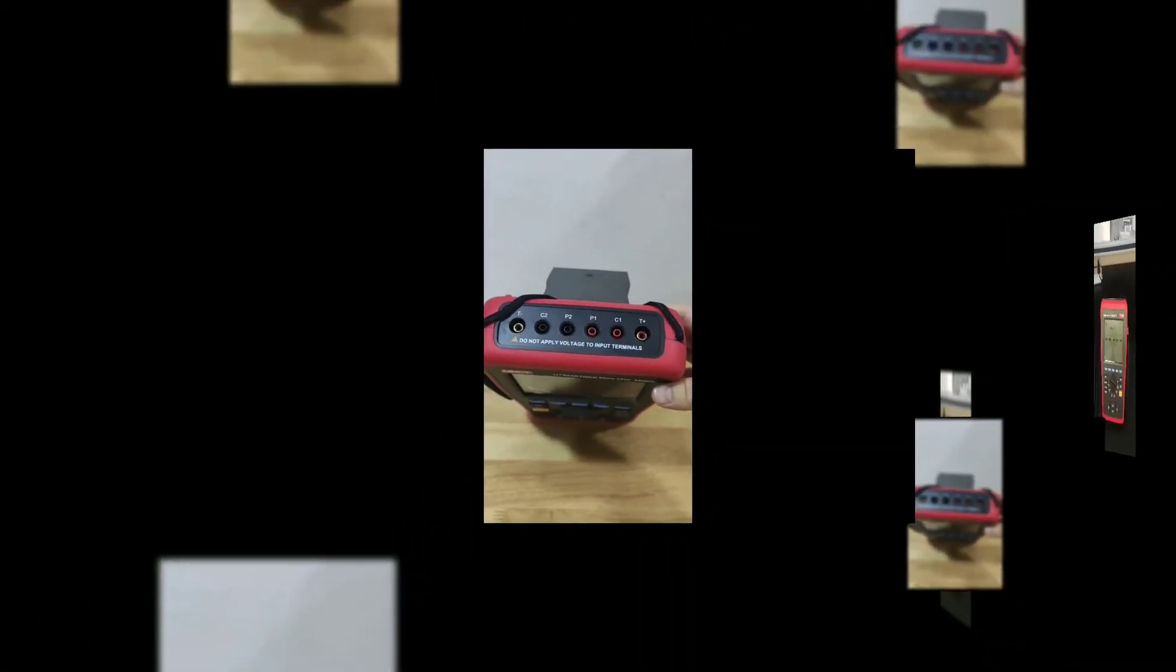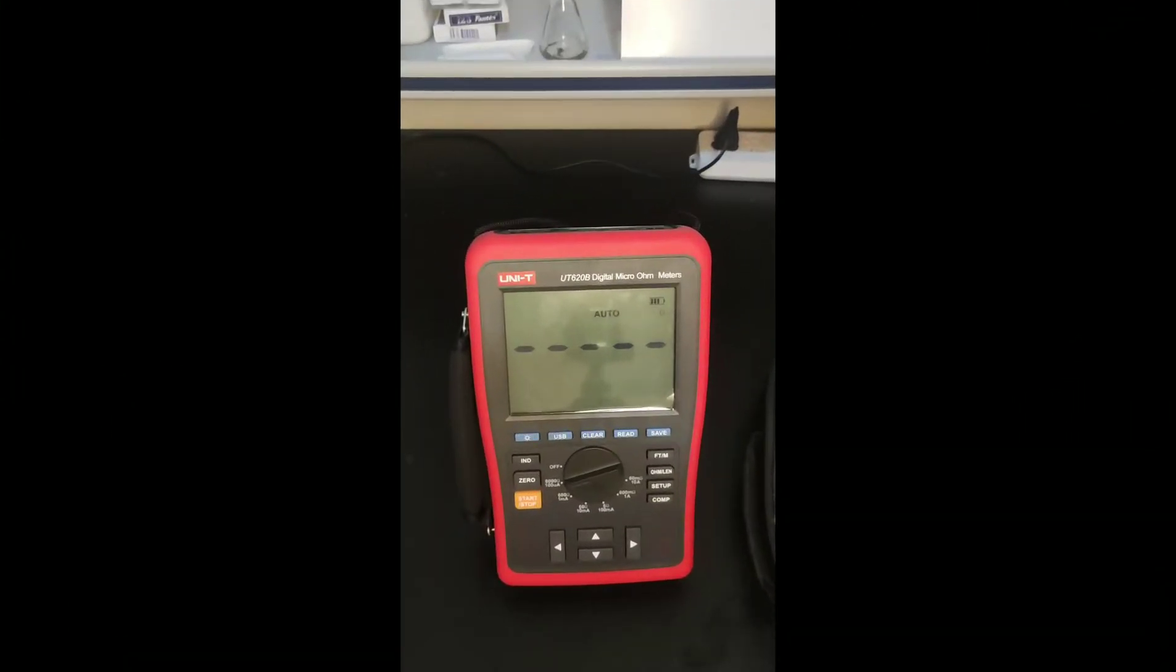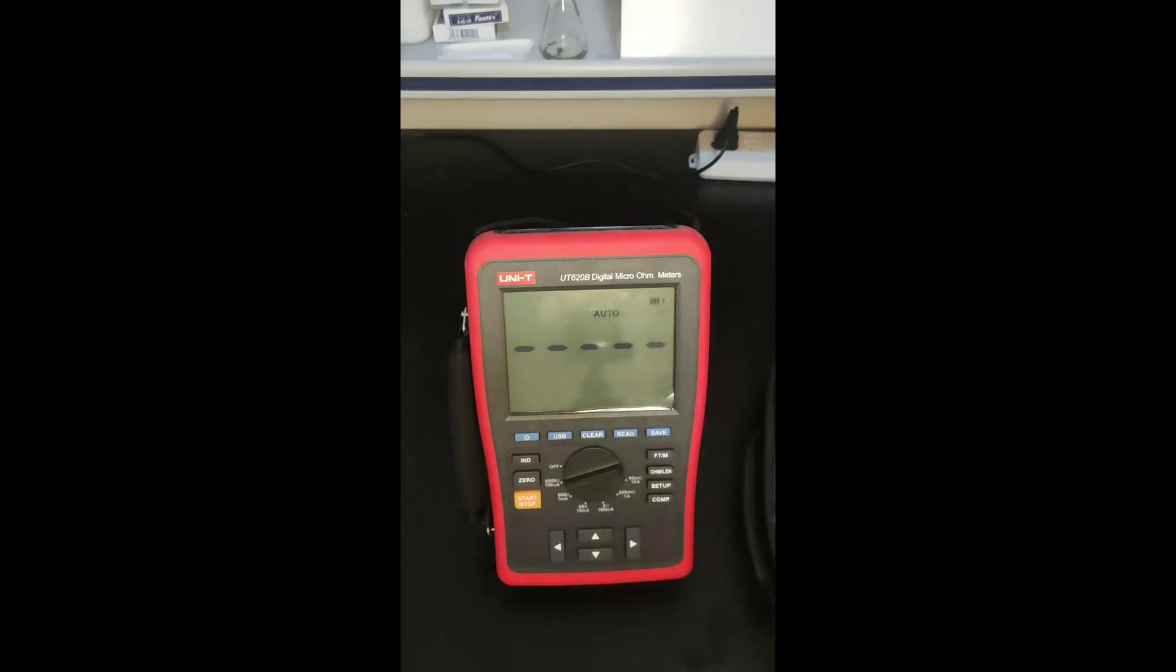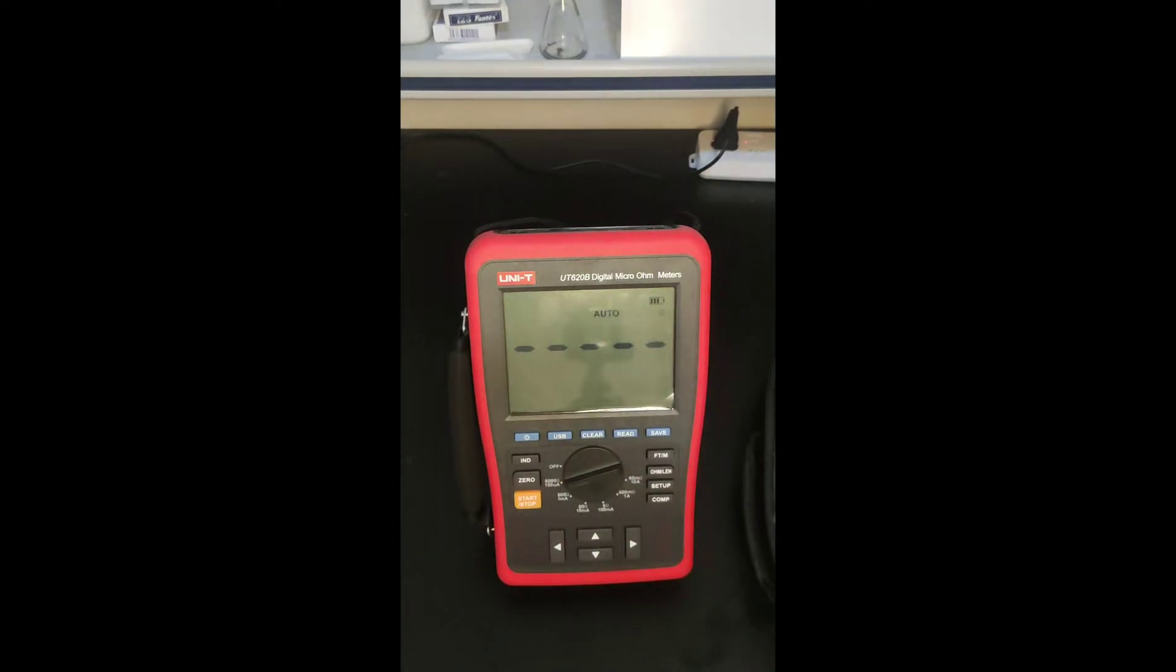And we didn't put on the cable yet. This is the place to connect. Now let's try to operate this machine. I have turned this machine on by this turn this button from off to any of this point. These are the mirroring ranges of the ohmmeter from 6000 ohm to 60 milli ohm. Now we turn it to the largest resistance, 6000 ohm. And on the screen we didn't see any readings because we didn't connect it to any cables.